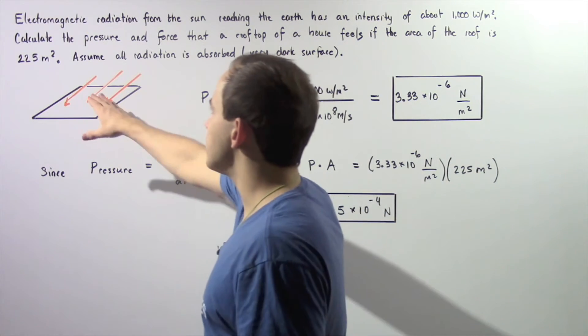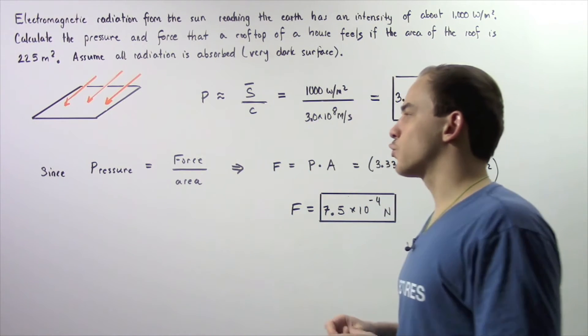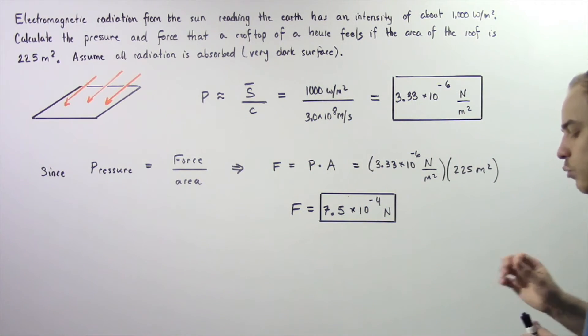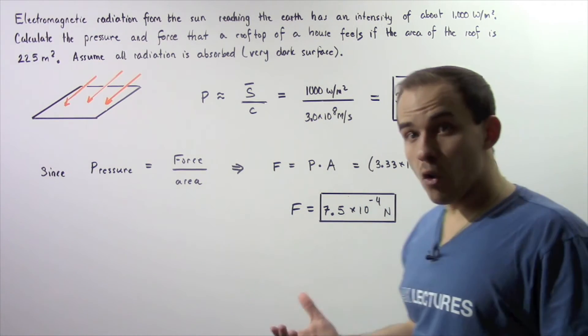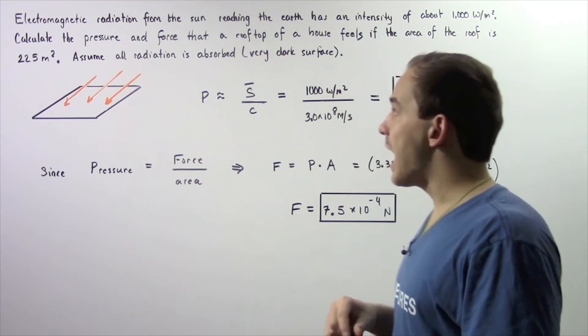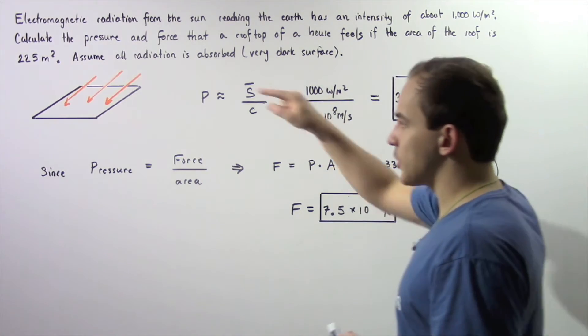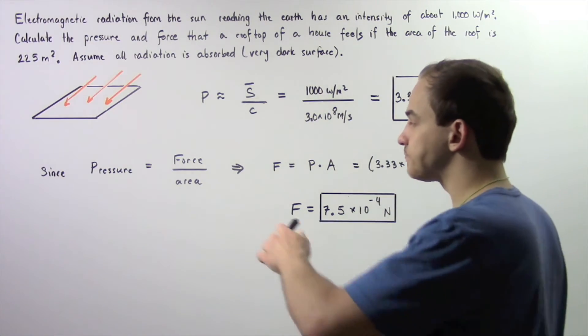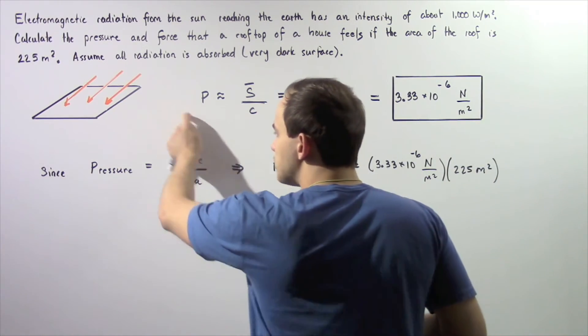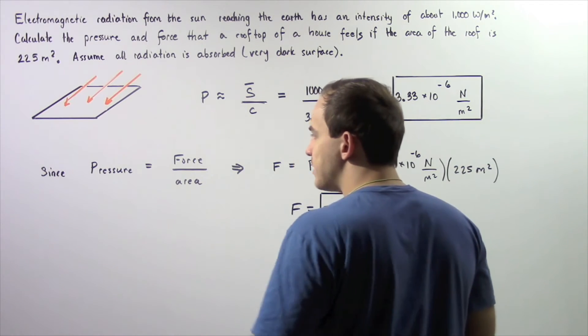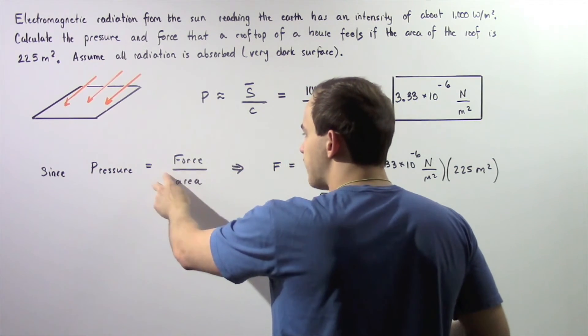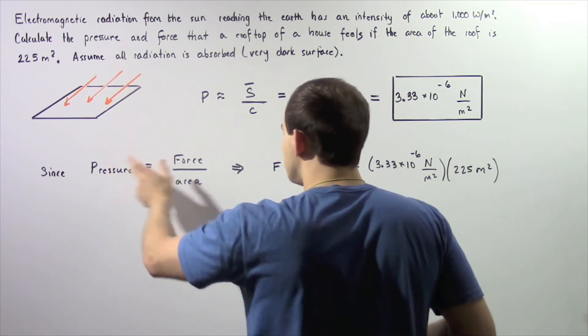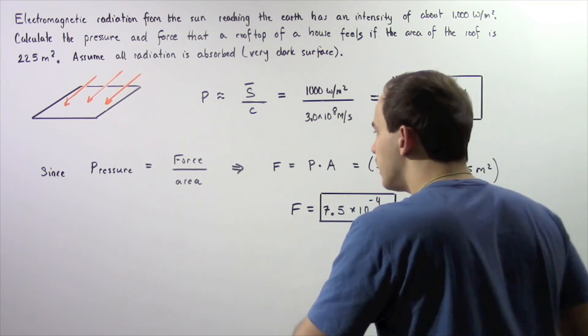Now if we want to calculate the force created by the radiation on the surface of the roof, we use the equation: pressure equals force divided by area. Multiplying both sides by area, we get force equals pressure times area.